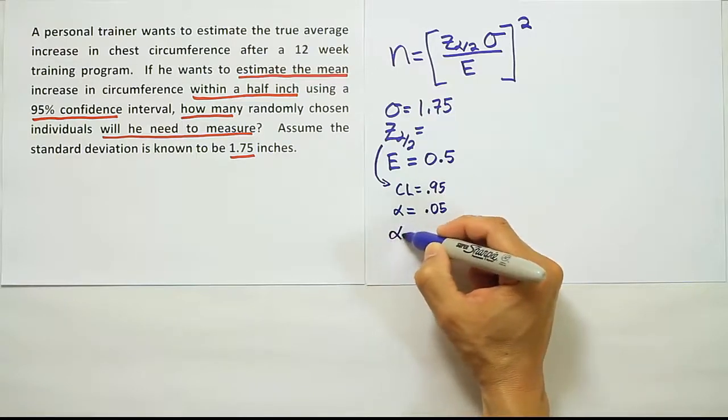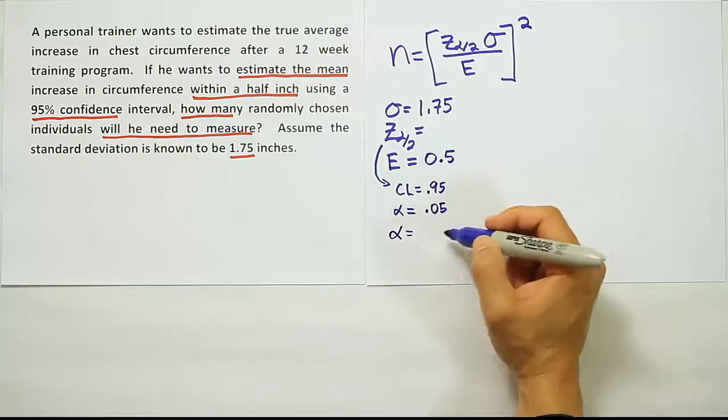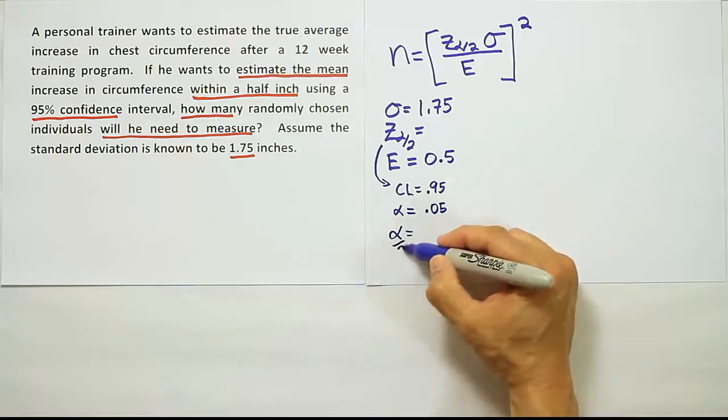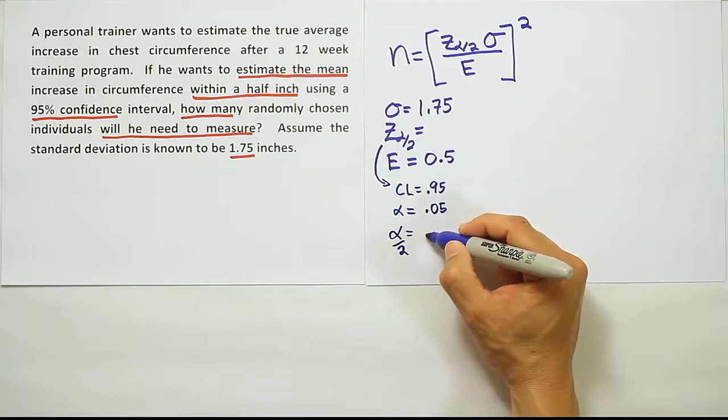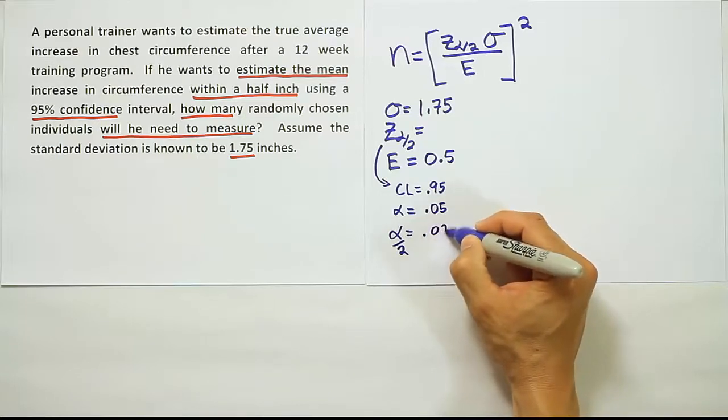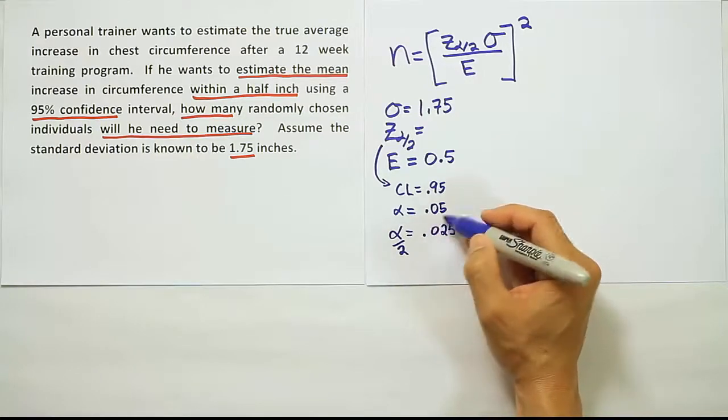If we're going to look this up on the t table to get that extra decimal place of accuracy, we will do alpha divided by 2. That gives you half of 5%, which is 2.5% or 0.025. So we want to look up this value.